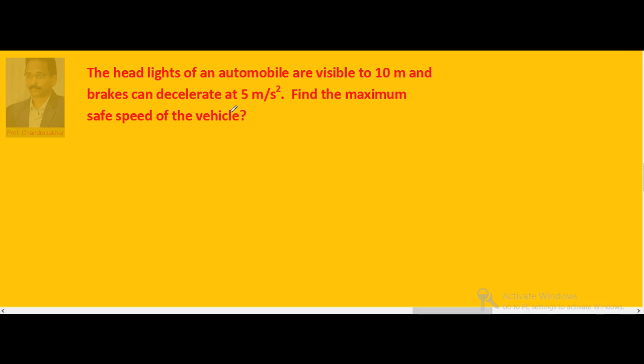The headlights of an automobile are visible to 10 meters and brakes can decelerate at 5 meters per second squared. Find the maximum safe speed of the vehicle. Let's say the maximum safe speed of the vehicle is U.